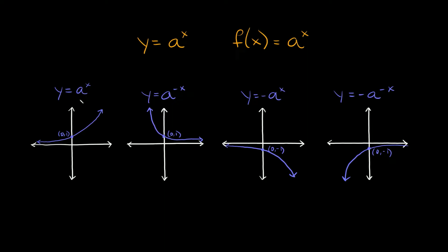It would be kind of a pain trying to memorize what each of these graphs are supposed to look like, so one little trick you can use is using the a and the x. Your x is your x-coordinate, and the a you can think of as the y-coordinate. Here we have a positive x and a positive y, so we're going to head in the positive x direction and the positive y direction. For the second case, we have a negative x and a positive y, so that graph should be growing into the second quadrant.